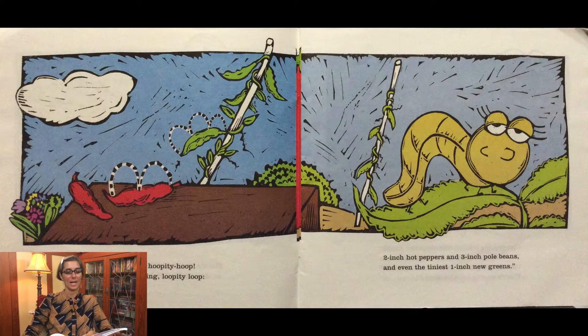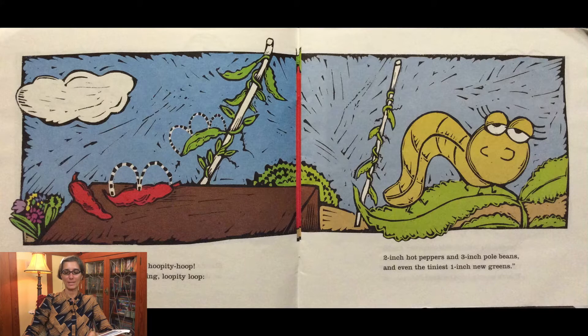Squirmy wormy hoppity hoop. I measure everything. Loopity loop. Two inch hot peppers and three inch pole beans and even the tiniest one inch new greens.